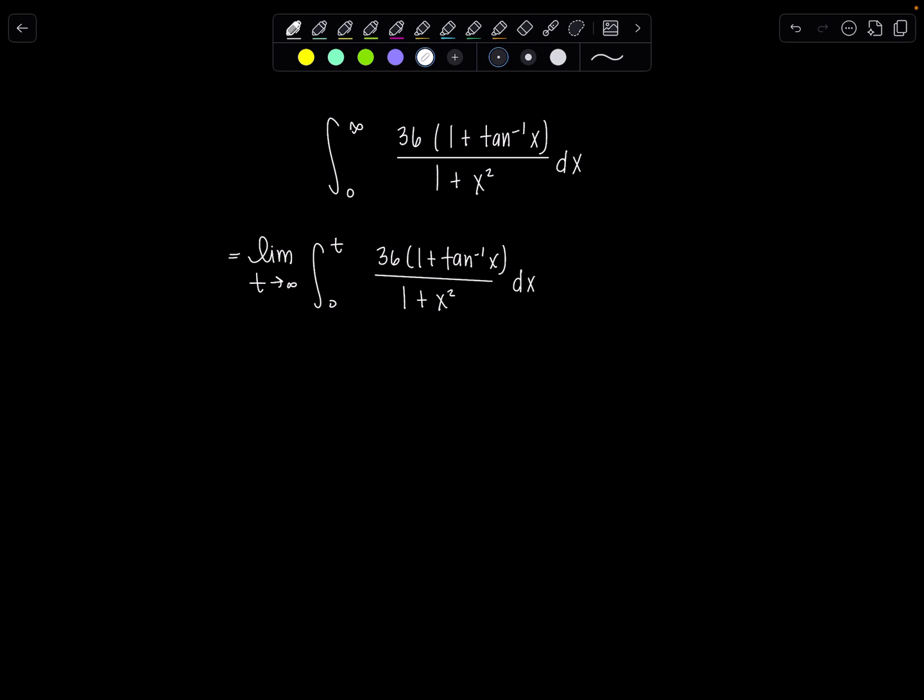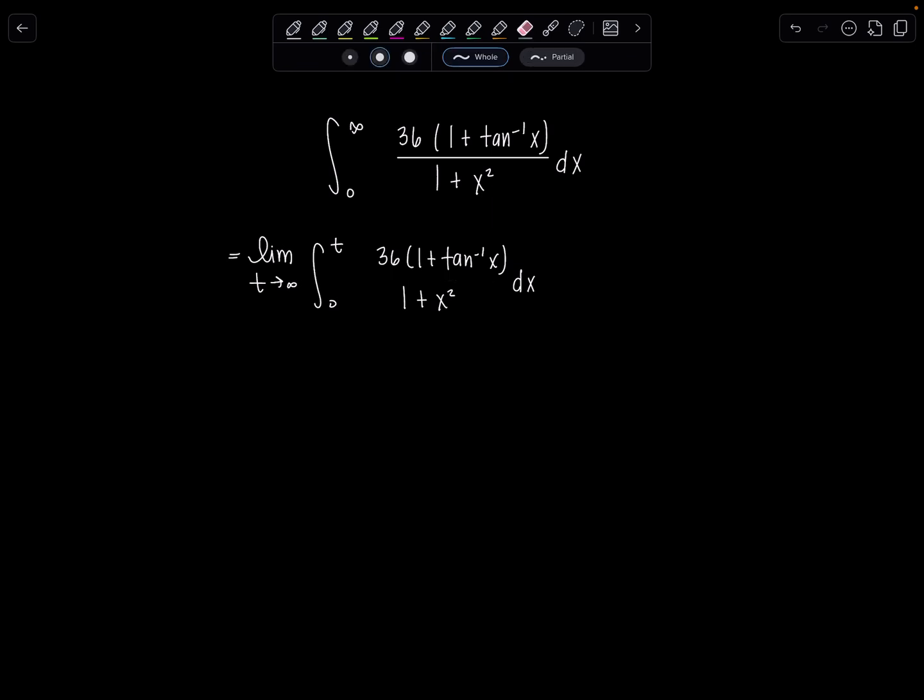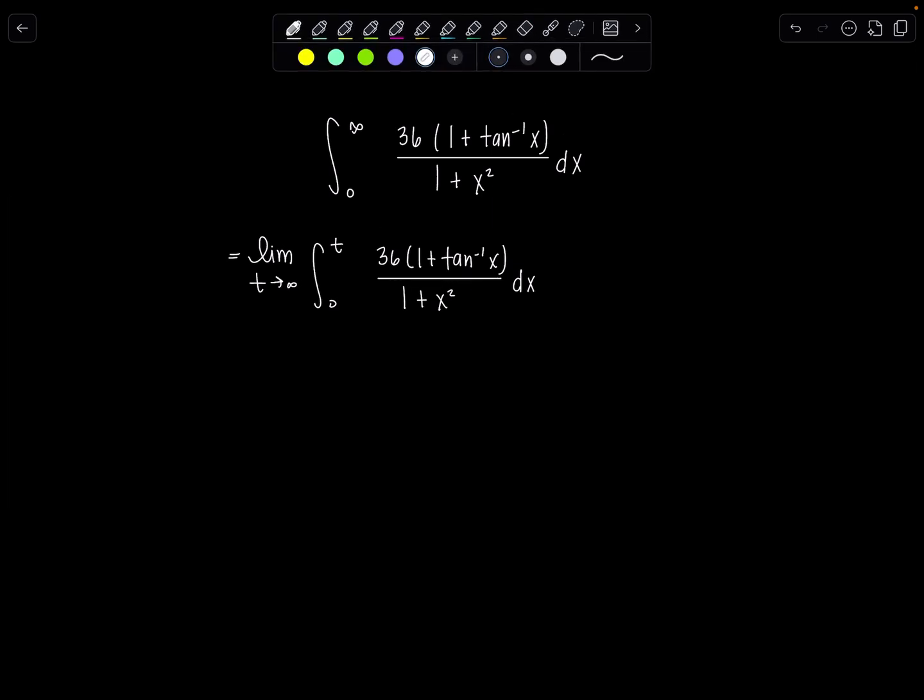From here we need to actually just evaluate the integral. I saw a lot of students were splitting this up into two, but then you're creating double the work. We can just go in with the u sub and in one fell swoop handle business. I'm going to let u be 1 plus tan inverse of x. Then du would be derivative of 1 is 0, derivative of tan inverse of x is 1 over 1 plus x squared dx. And look at that, there's my du sitting pretty hanging out over there.